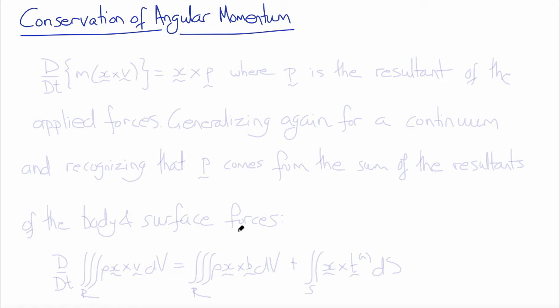we could write a material derivative with respect to time of mass times the vector cross product of the position vector and the velocity vector will equal the vector cross product of the position vector and the external force vector P,